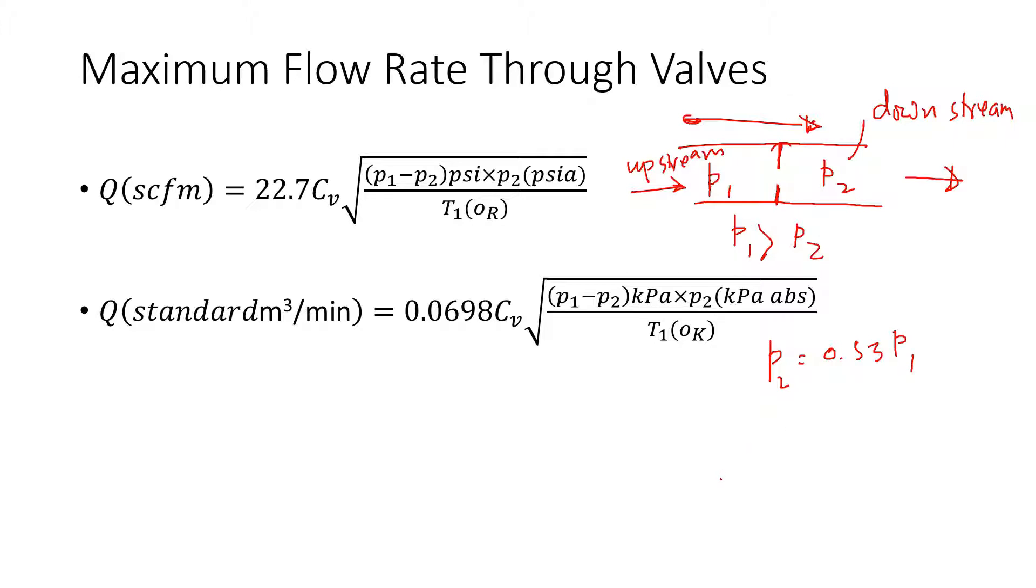And there will be no additional flow. So to achieve the maximum flow rate, Q max, the maximum pressure difference we can have is P2. We can set maximum 0.53 times P1.